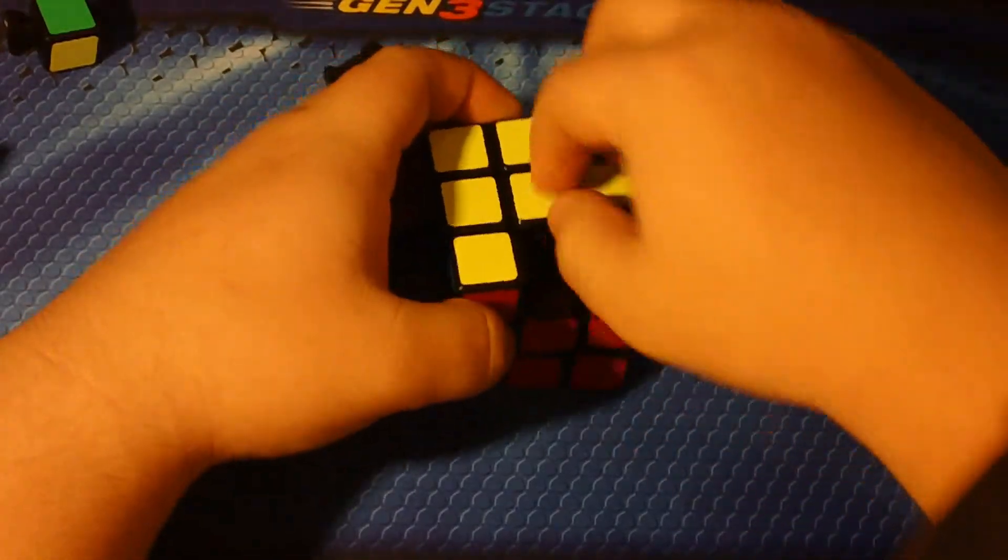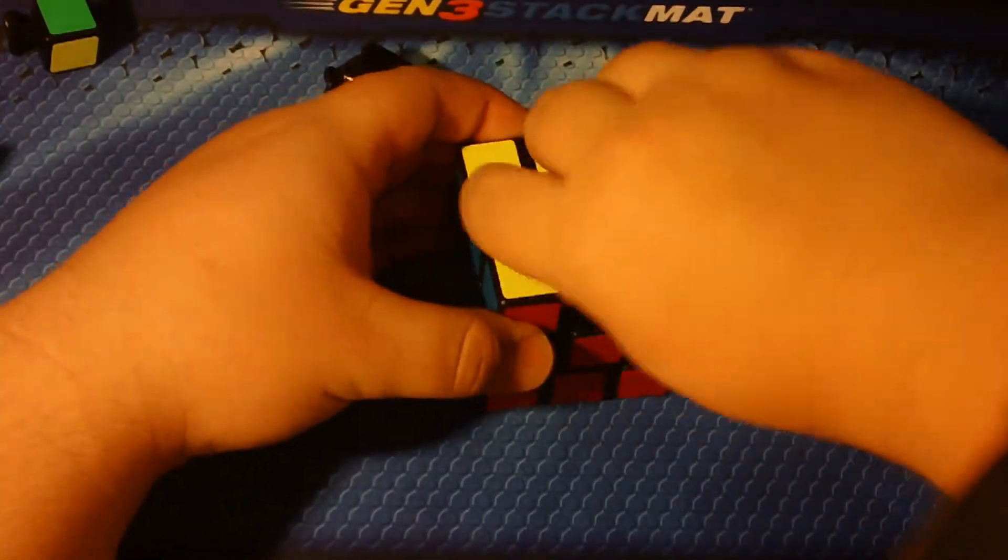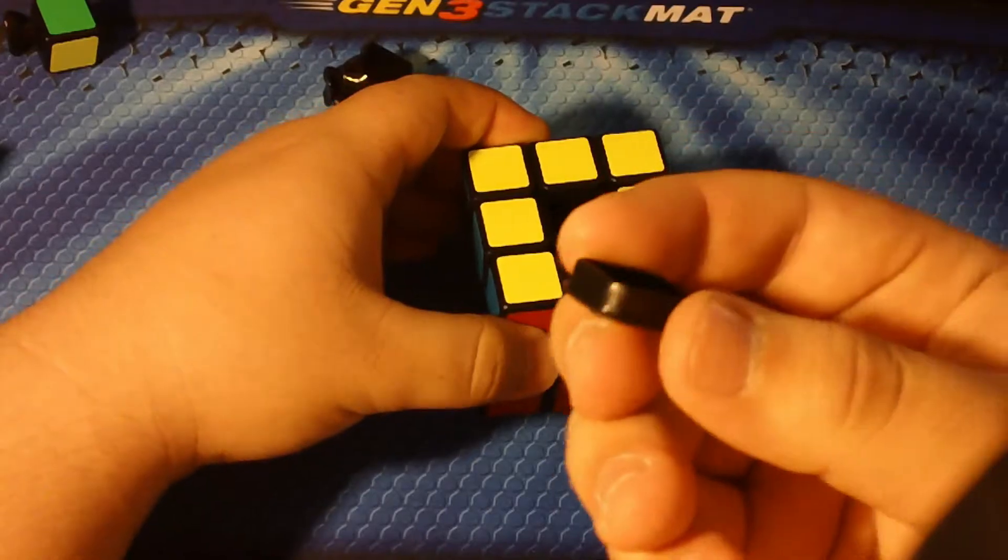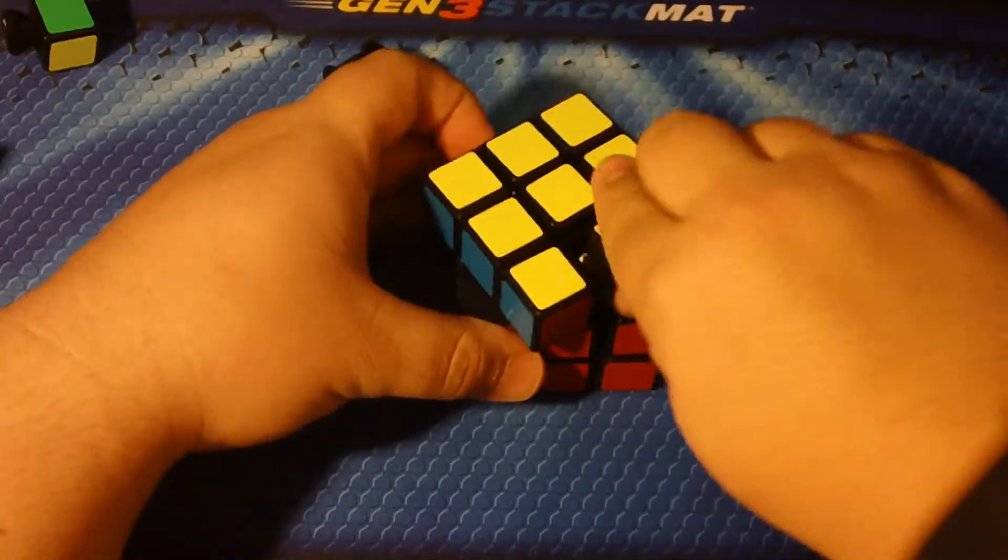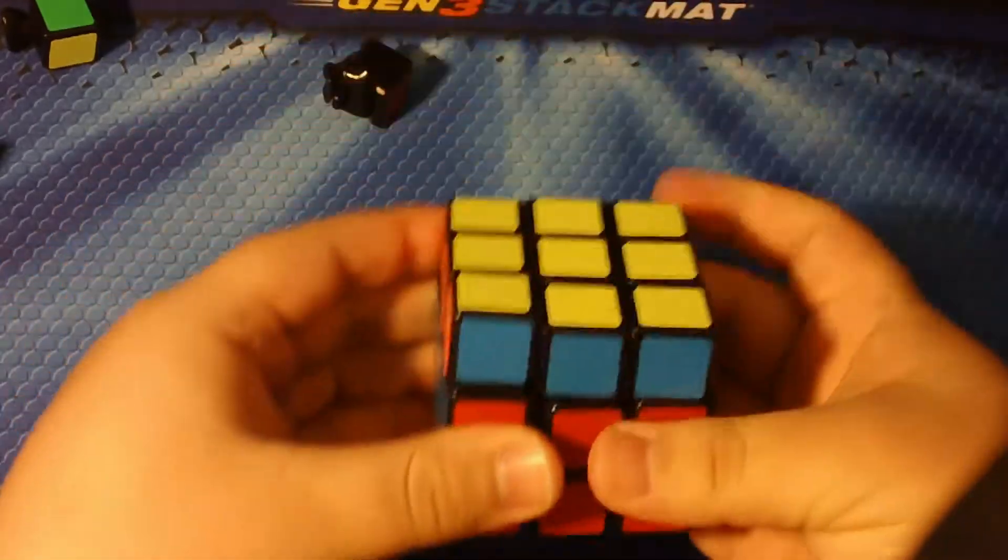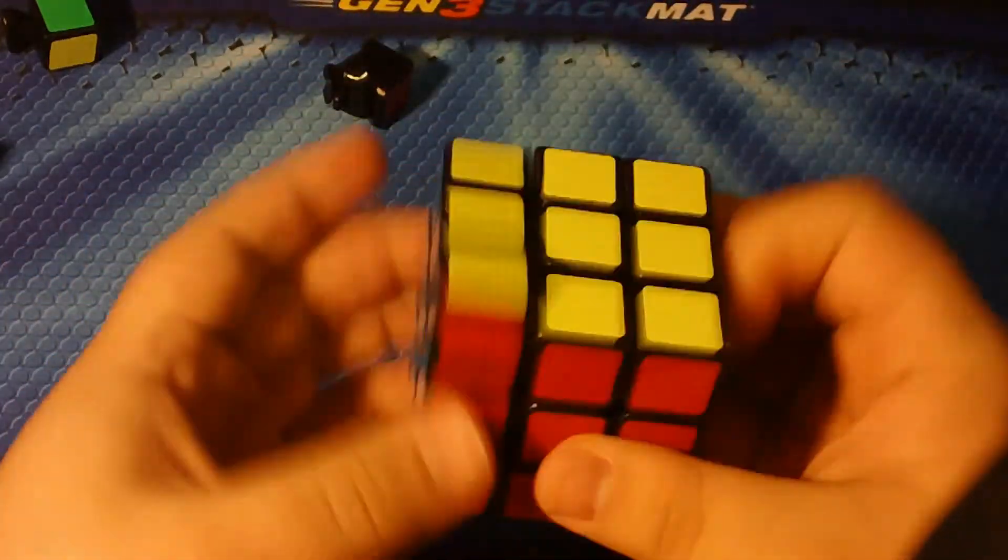So that is pretty much the only notable difference, and another difference I saw but I don't know if it really makes a difference is the center cap is different from the first version. So I mean other than that, this cube is pretty much identical to the version 1.